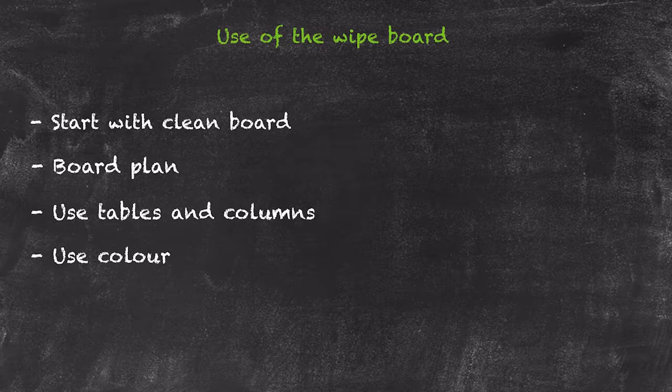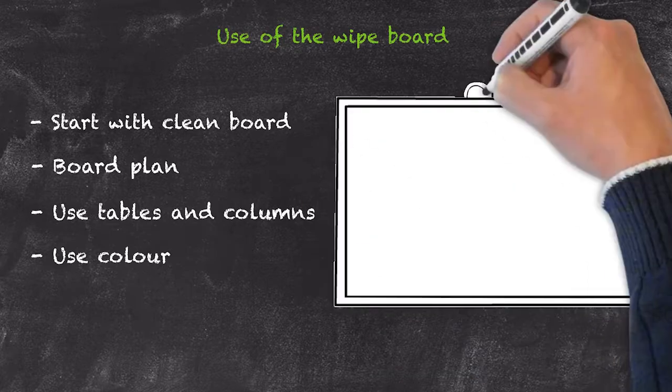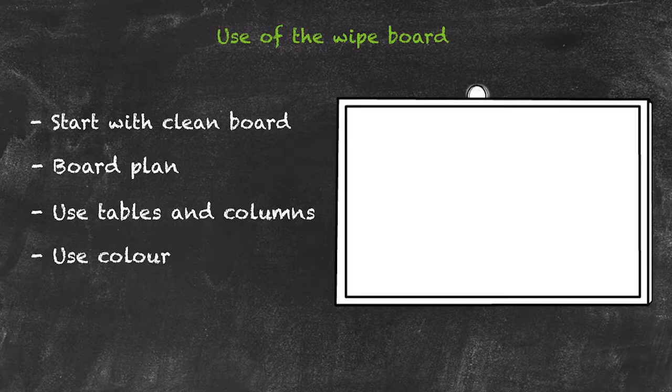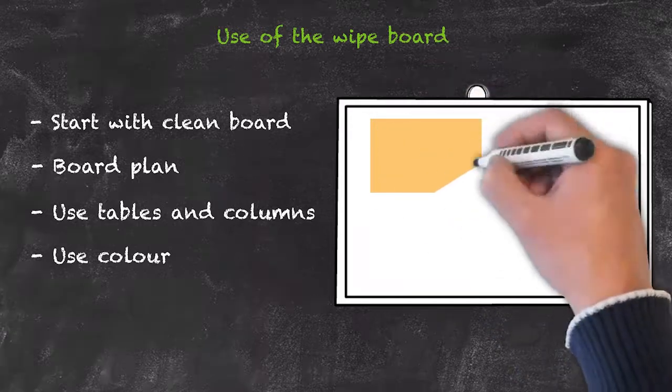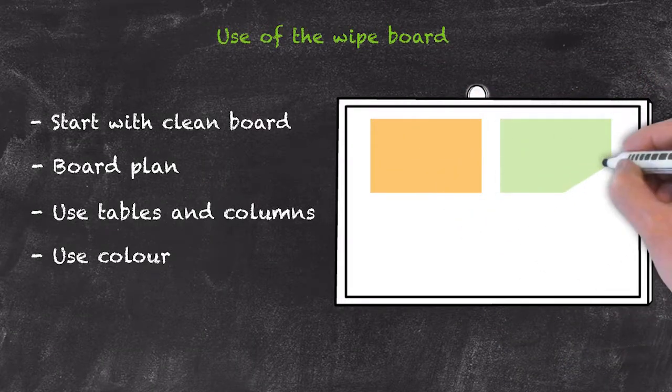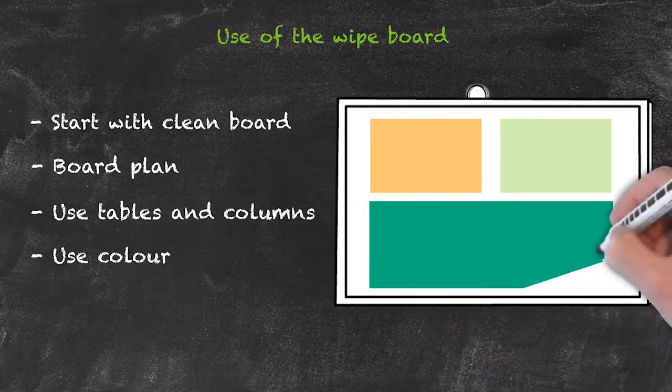So by starting with a clean board, decide on which areas of that board are going to be used for your various types of information, and then within that the use of different colours for different types of information.